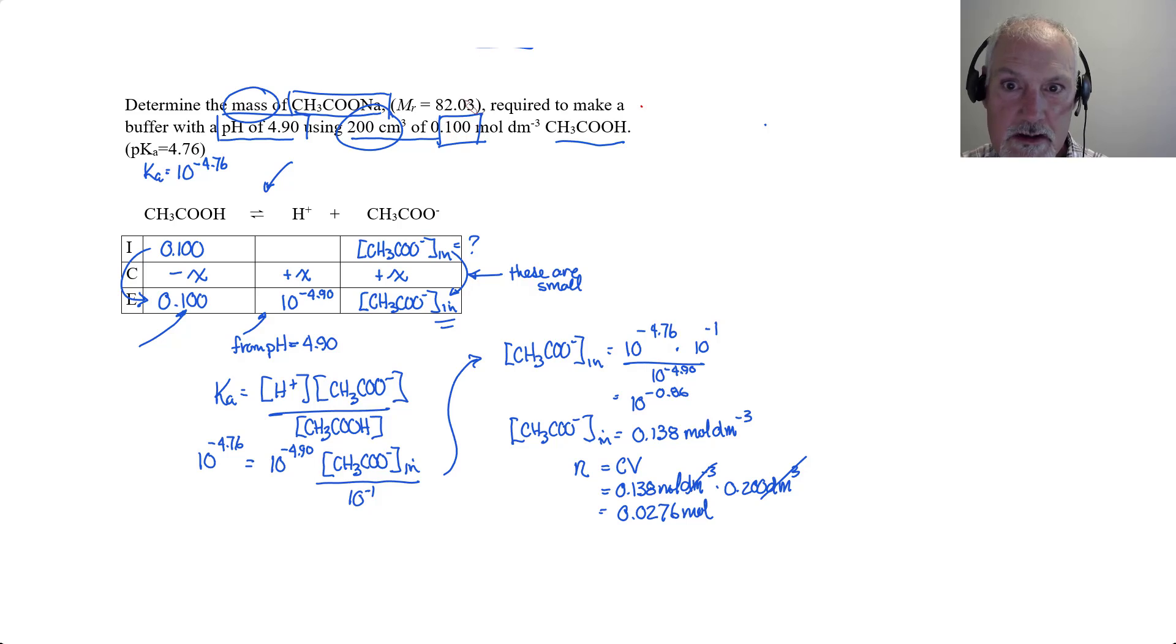Now my original salt has that molar mass so I can calculate the mass by going the number of moles times the molar mass. So the mass then would equal 0.0276 moles, and I'm going to multiply that by 82.03 grams per mole. And those will cancel giving me a final answer of 2.26 grams.